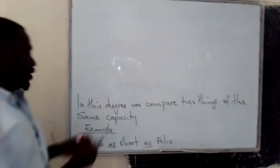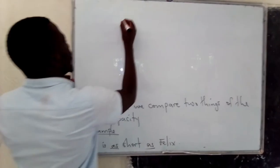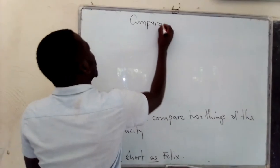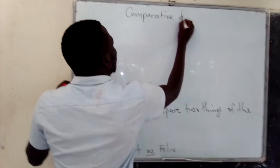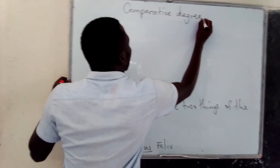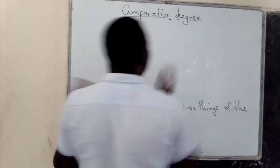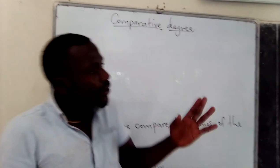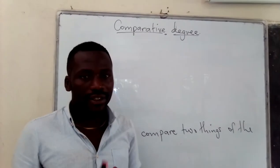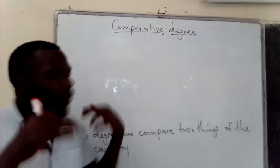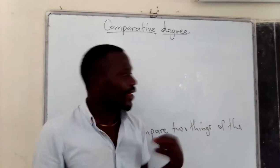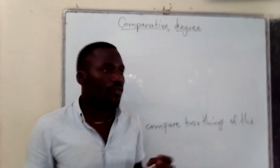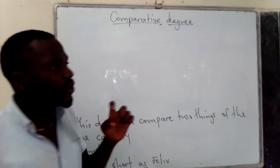Another degree of compulsion is the comparative degree. In this comparative degree, we compare two things, but not of the same capacity, where one is superior than the other, or where one is more stronger than the other. In most cases in this degree, we use a language structure which is 'more than' — in most cases, we use 'than'.